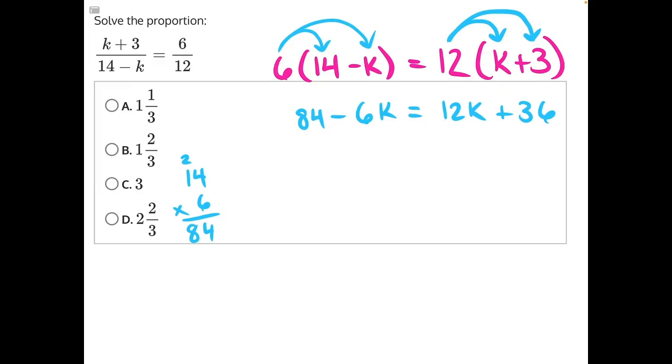Now we can do opposite operations to combine like terms and isolate our variable. Since 6k is being subtracted from 84, the opposite operation is to add 6k to both sides.